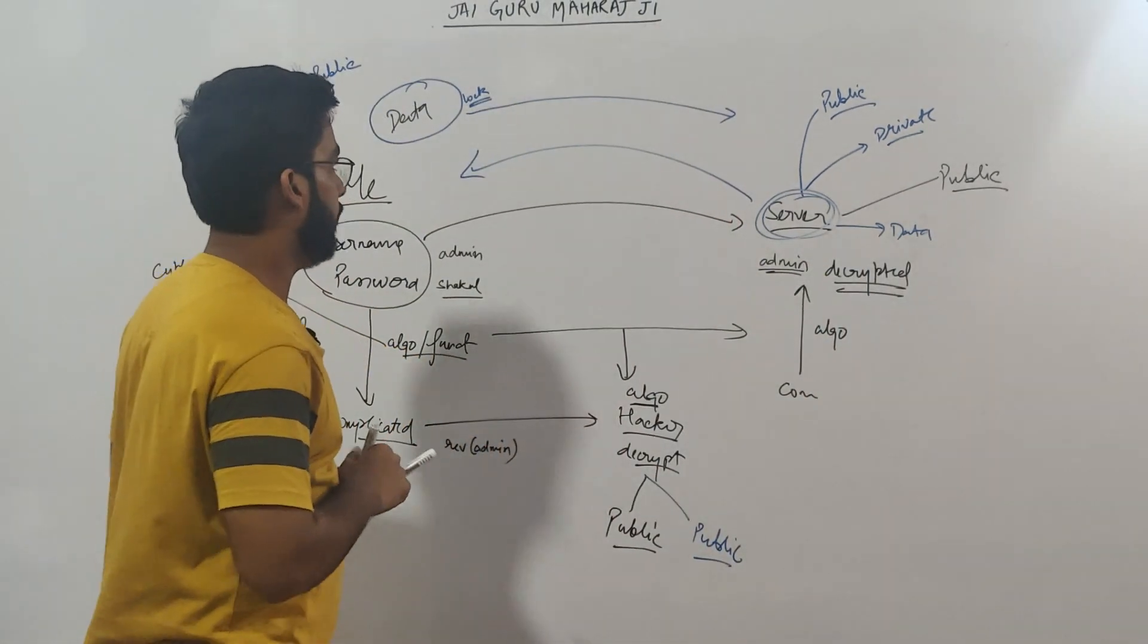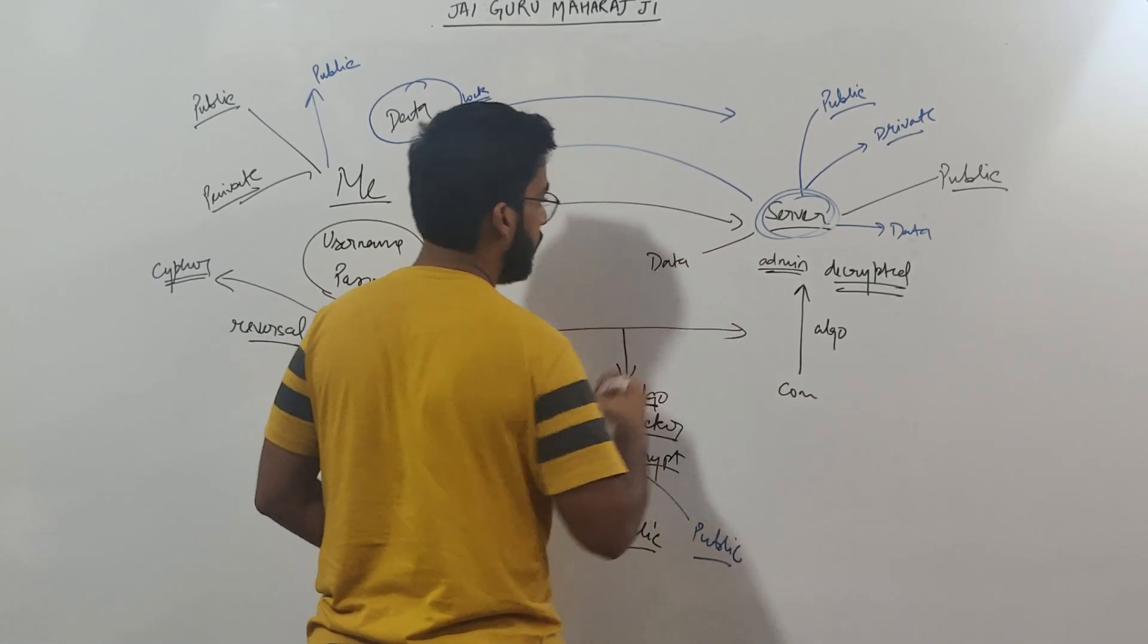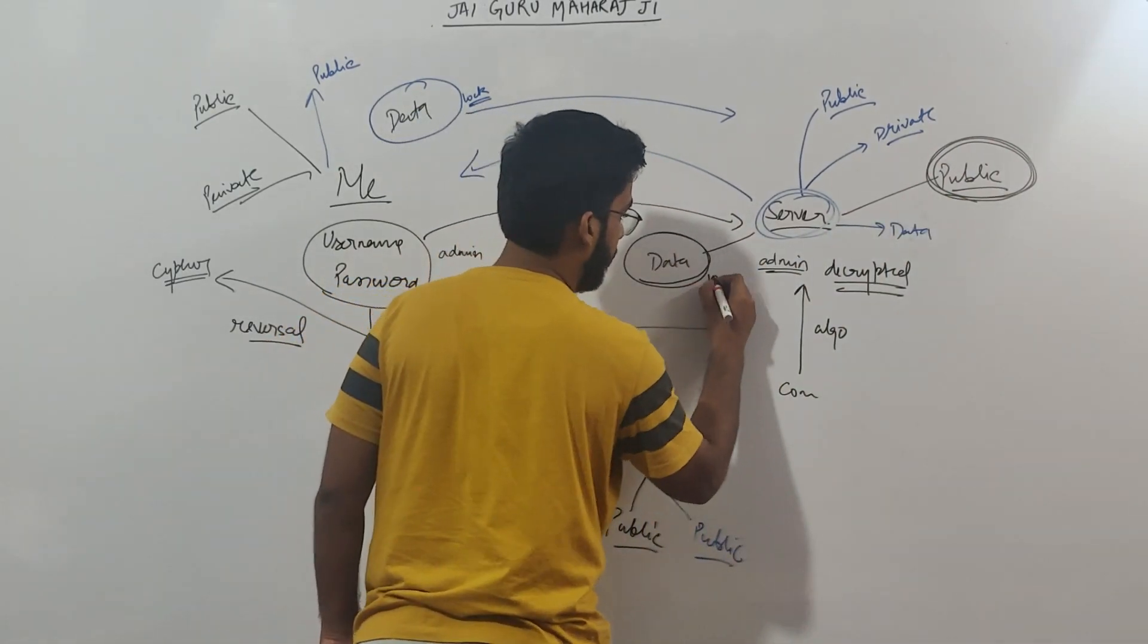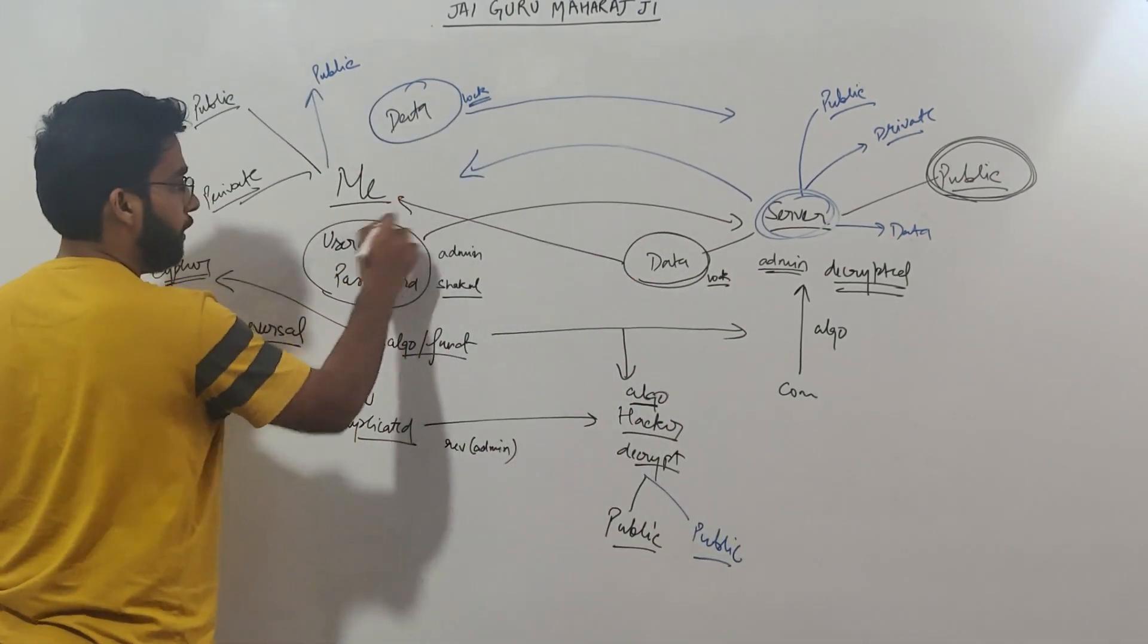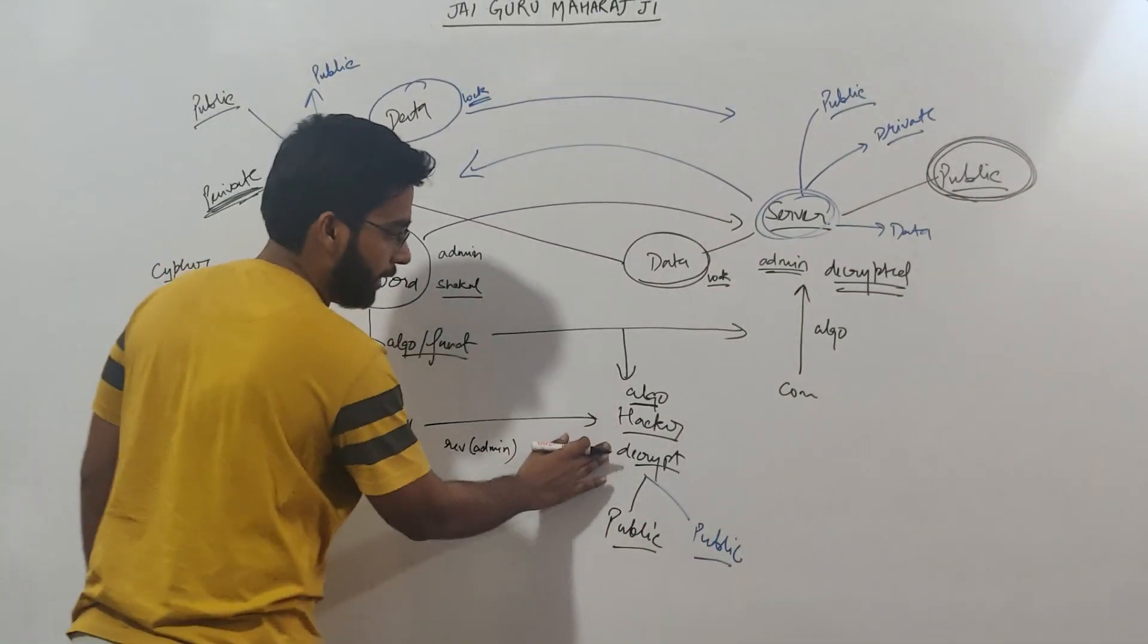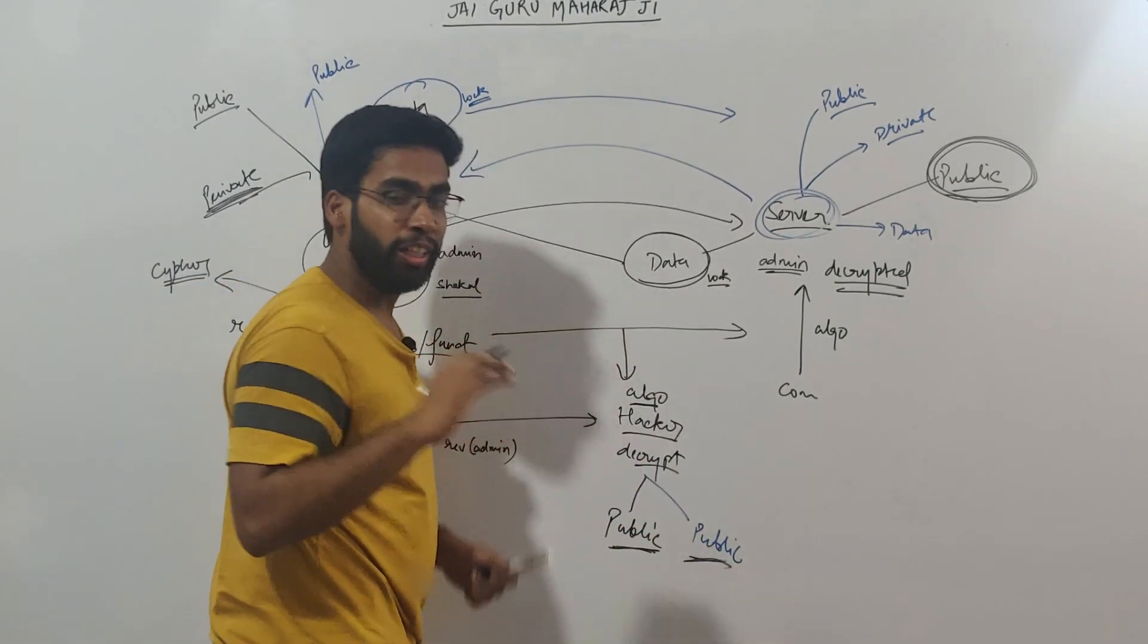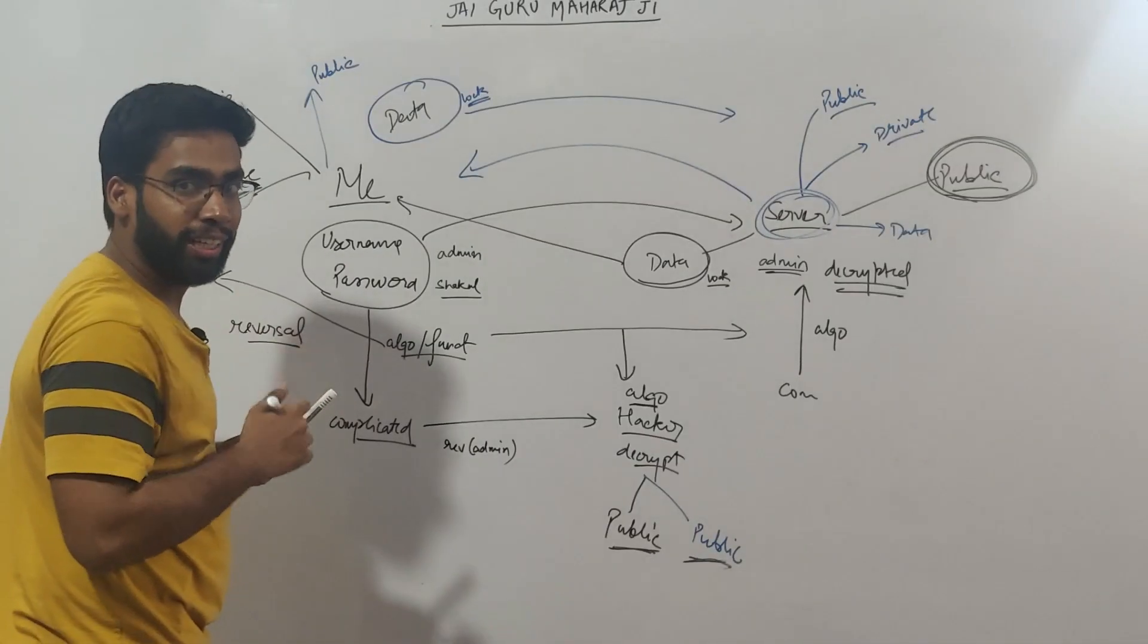If the server wants to send some data, if this guy wants to send some data, he will use my public key, the public key that I shared in the starting, to lock it. This lock is mine. Now once this data is received by me, I can use my private key to unlock this data. This guy, this hacker guy, has no idea what is going on. Because he only has public keys. He can only lock the data. He doesn't have the private keys which are required to decrypt the data.